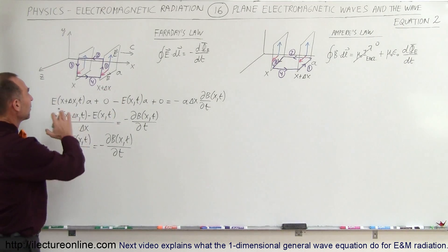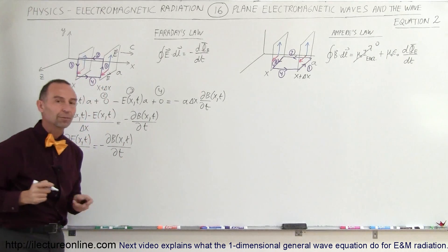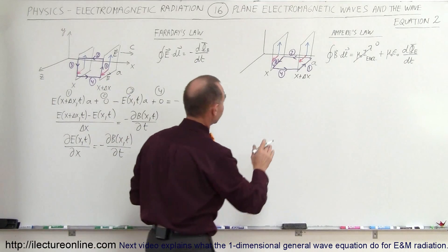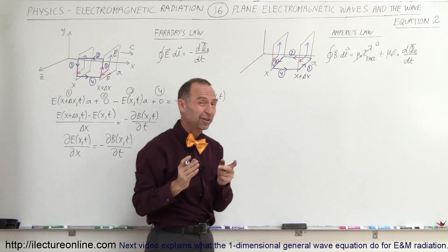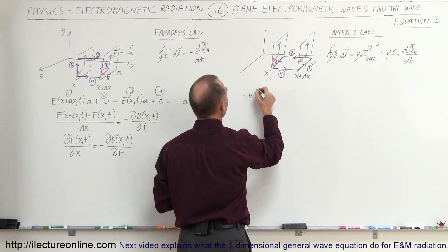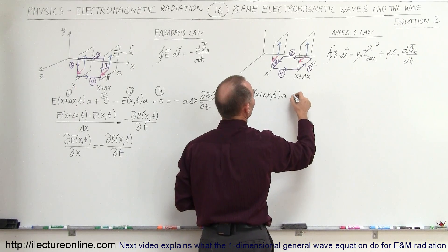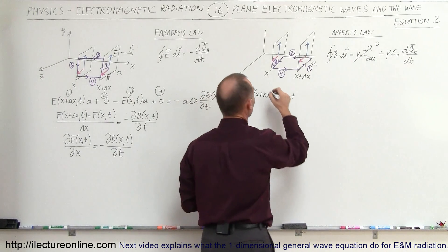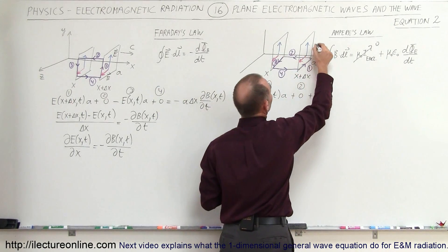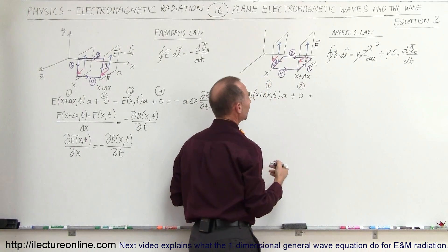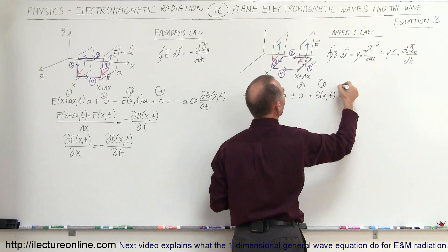Now I'm going to do the right side with Ampere's law. For clarity, these are the four segments of my closed loop integral. The direction of travel is opposite to the direction of the B field in segment one, so I get a negative sign — minus B as a function of x plus delta x and time, multiplied by a. Segment two is perpendicular to the B field, so zero contribution. Section three is in the same direction as the magnetic field, so it's plus B as a function of x and time.